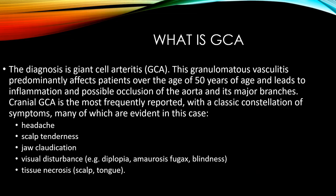What is giant cell arteritis? This granulomatous vasculitis predominantly affects patients over the age of 50 and leads to inflammation and possible occlusion of the aorta and/or its major branches. Cranial GCA is the most frequently reported, with a classical constellation of symptoms including headache, scalp tenderness, jaw claudication, visual disturbances, diplopia, amaurosis fugax or blindness, and tissue necrosis of the scalp and tongue. In the current case we have jaw claudication and headache.